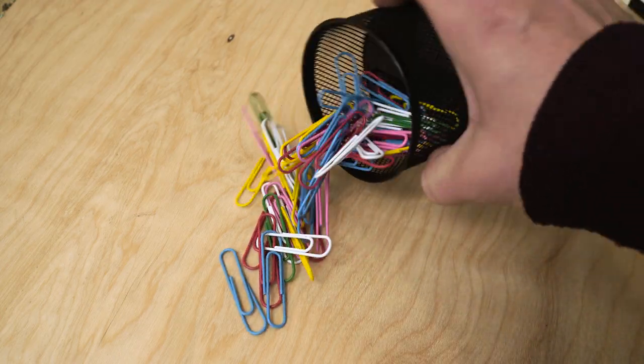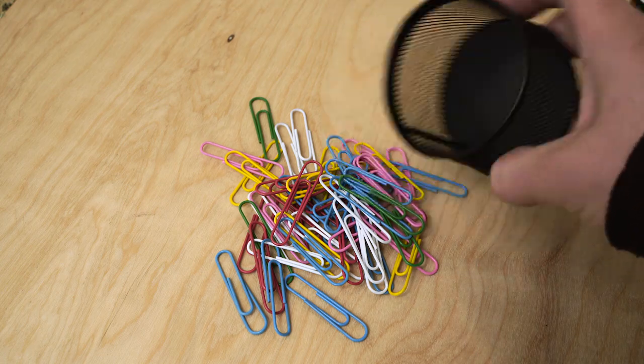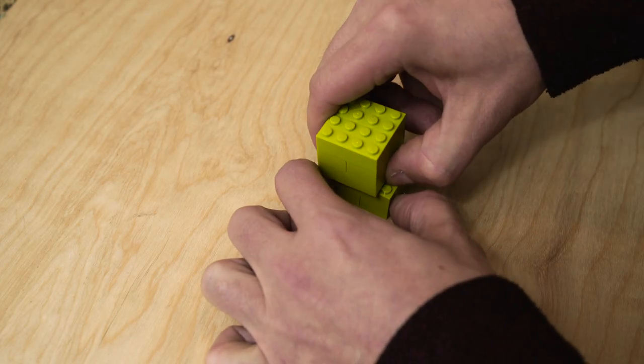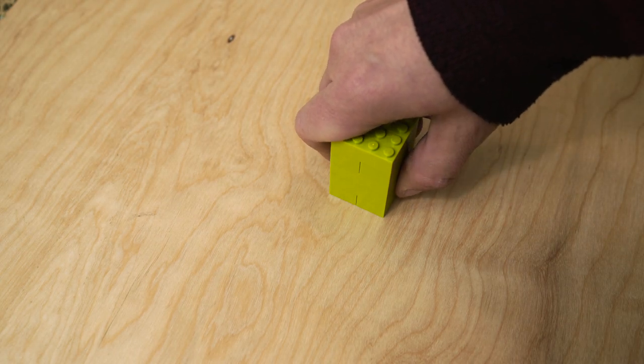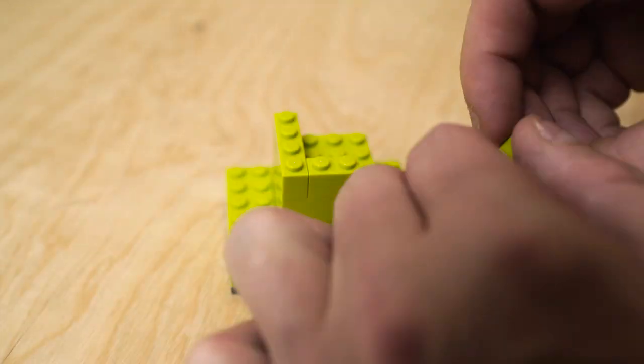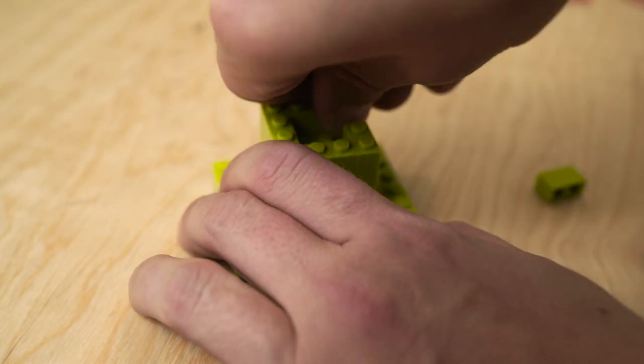Let's talk desk essentials. Your paper clip holder is boring, so liven it up. The first step is to assemble a fairly basic stack of bricks. You can use any height you want, but when you reach the top, surround the center with smaller pieces.